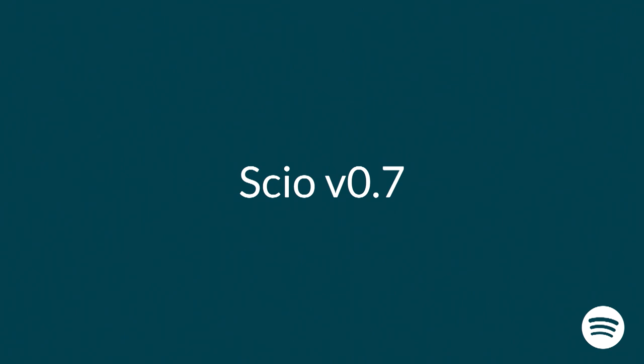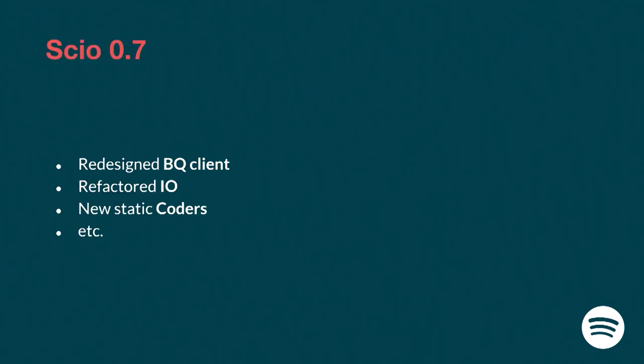Now I'm going to talk about what we're doing for the next version of Scio, which we're going to release in a few weeks — Scio 0.7. We're currently running Scio 0.6 in production at Spotify. We are actually breaking things for the first time ever in Scio, so if you're migrating from 0.6 to 0.7 your code might not compile immediately. One thing we did is we rewrote the BigQuery client — it's much nicer and more consistent with the rest of Scio.